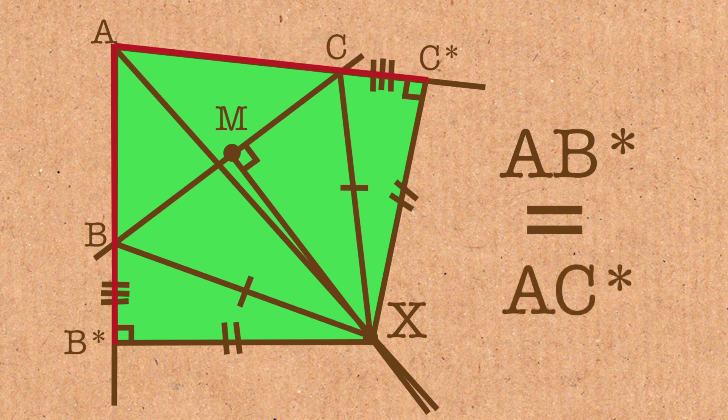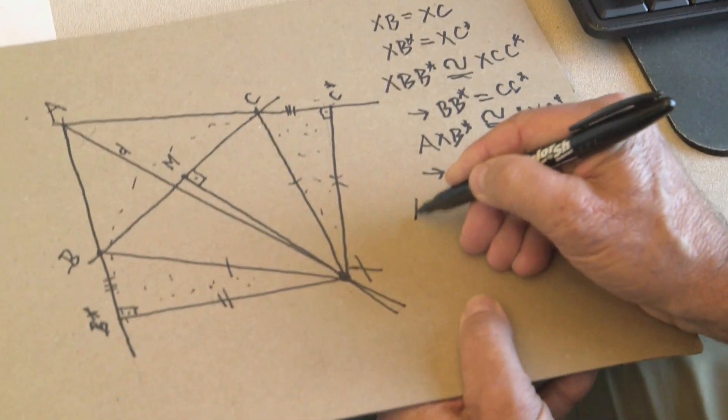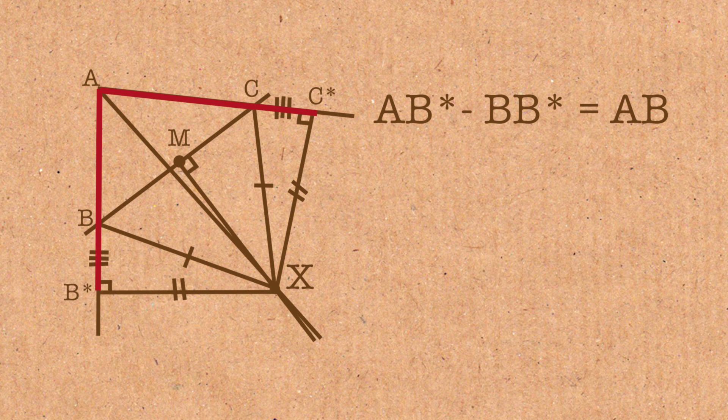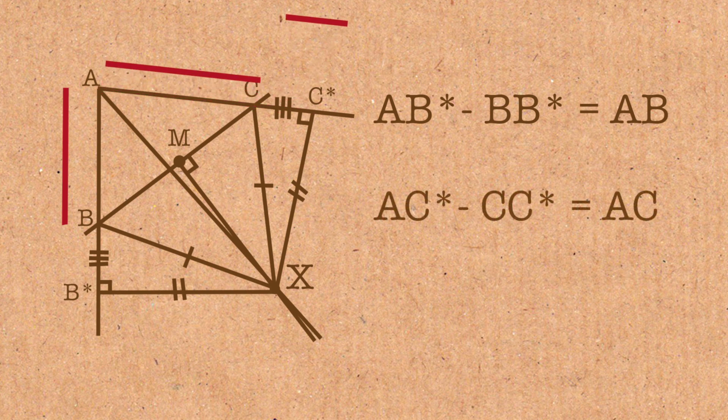Now, what can we conclude from all that? Well, we can say that AB star minus BB star is really just the side AB. And we can say that AC star minus CC star is just the side AC.